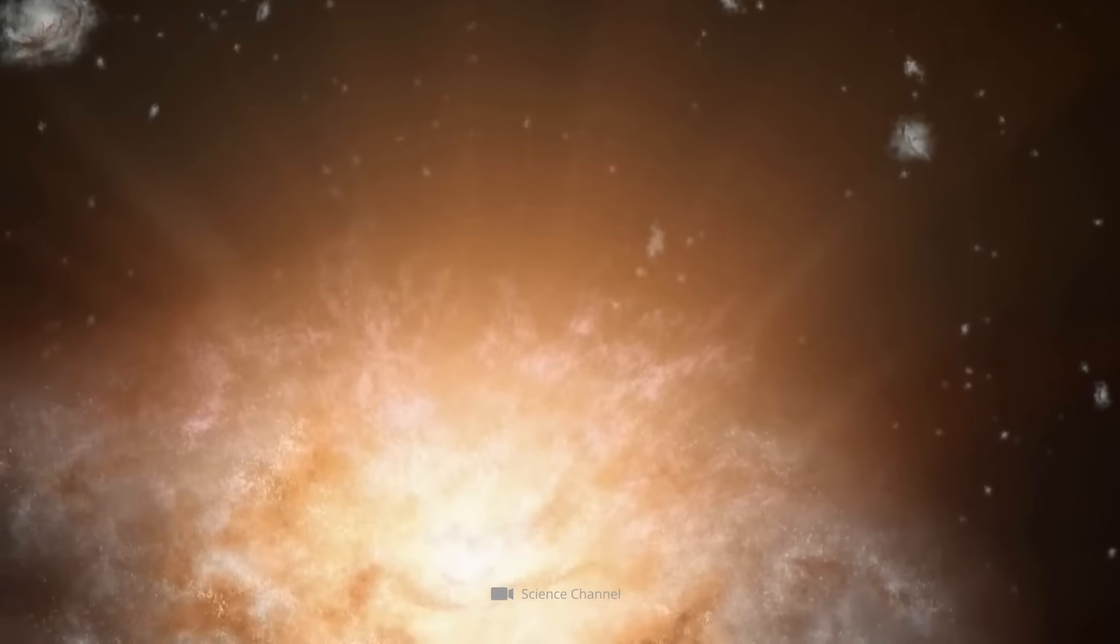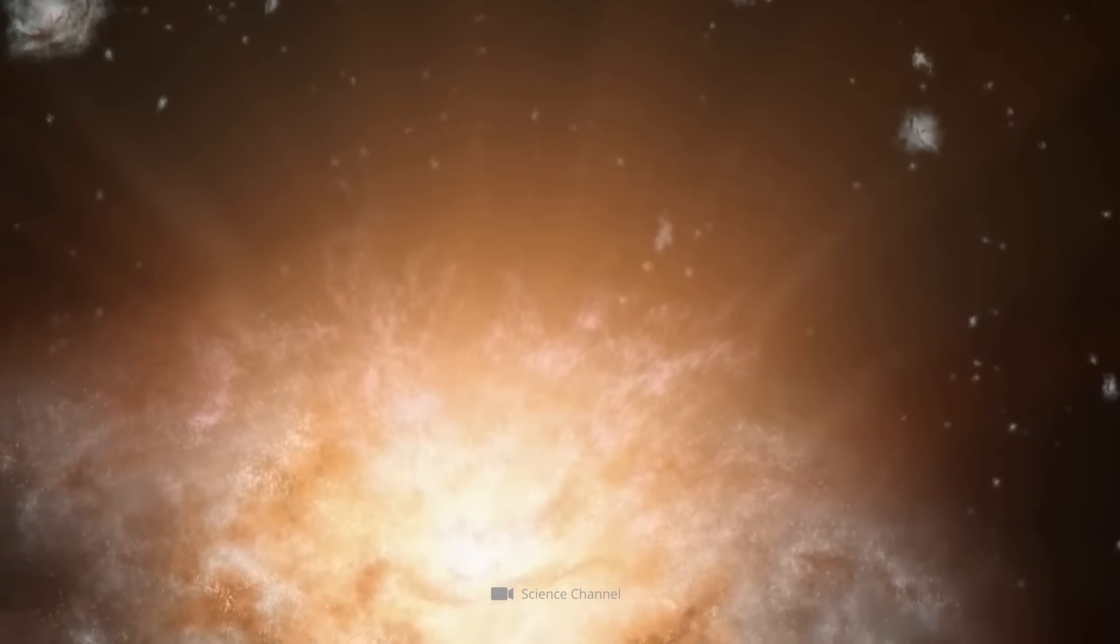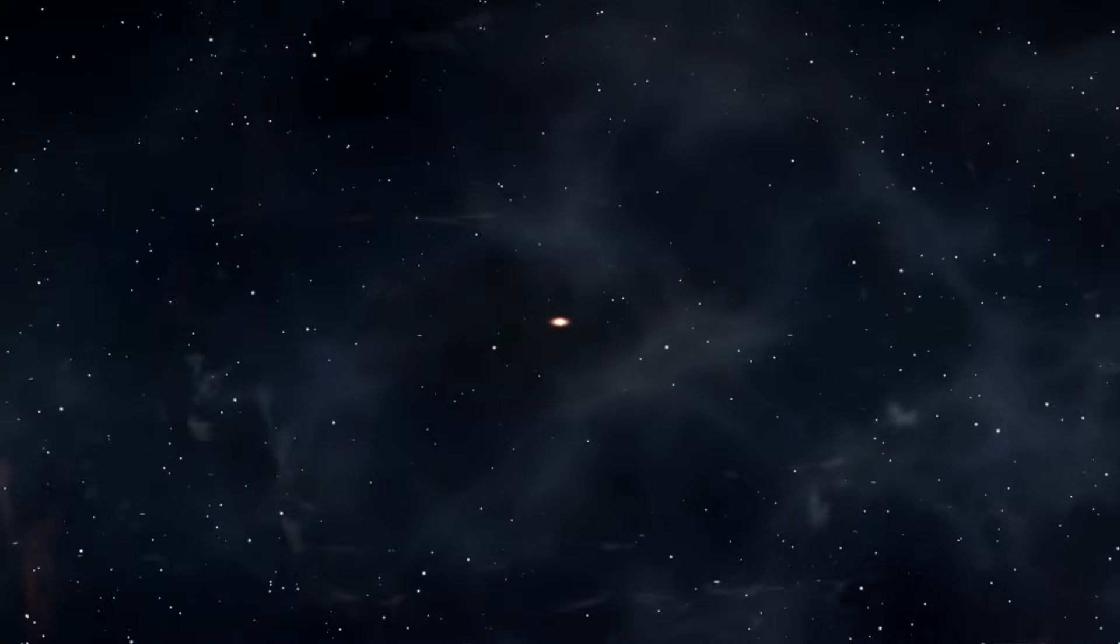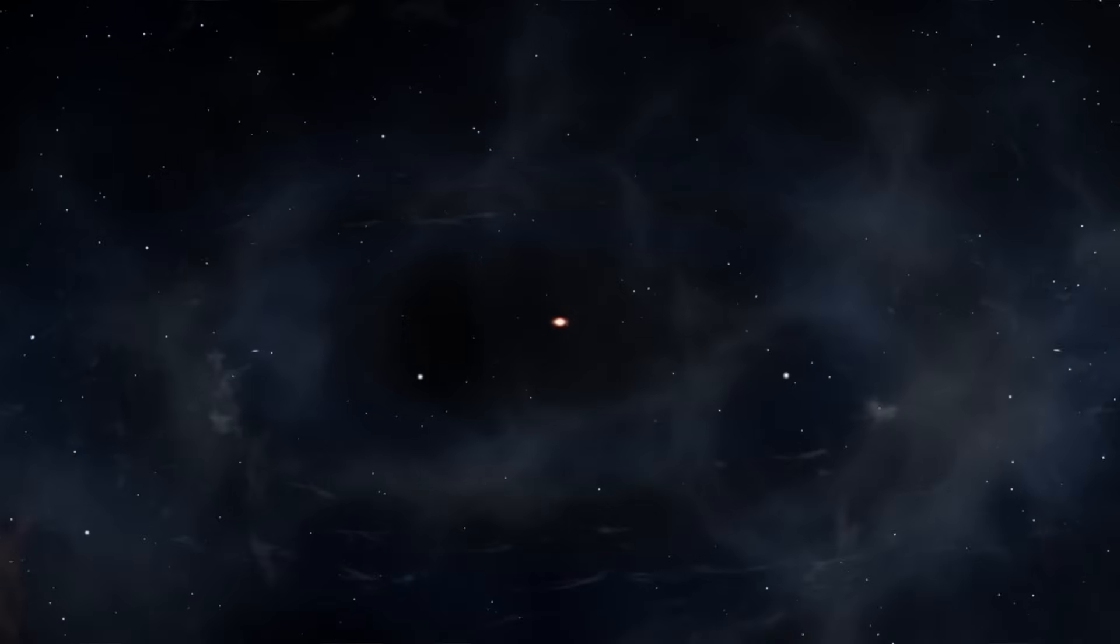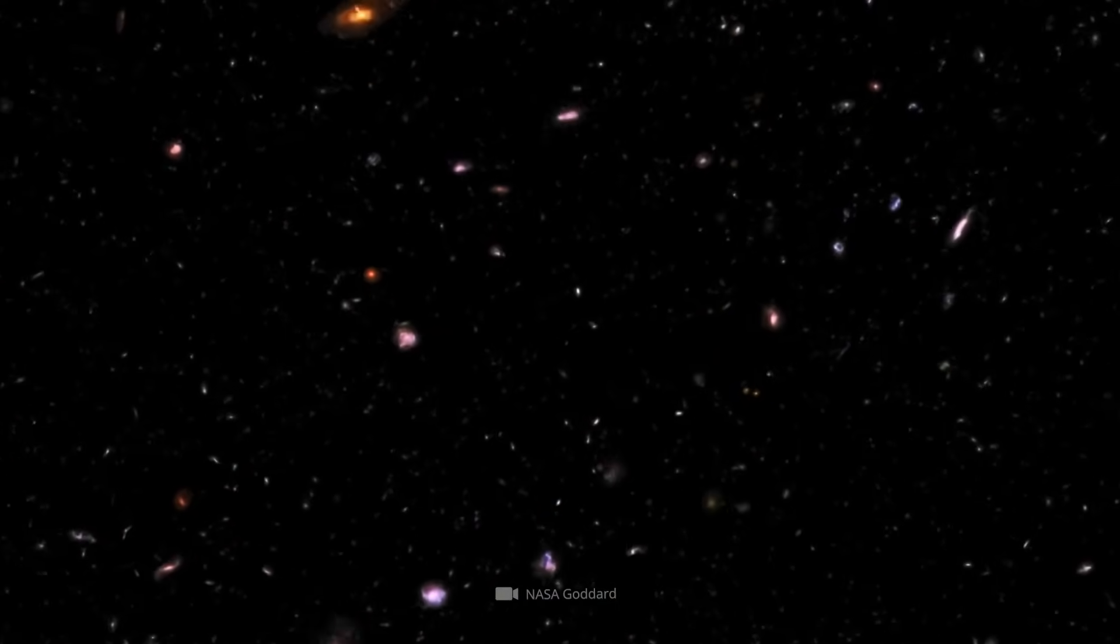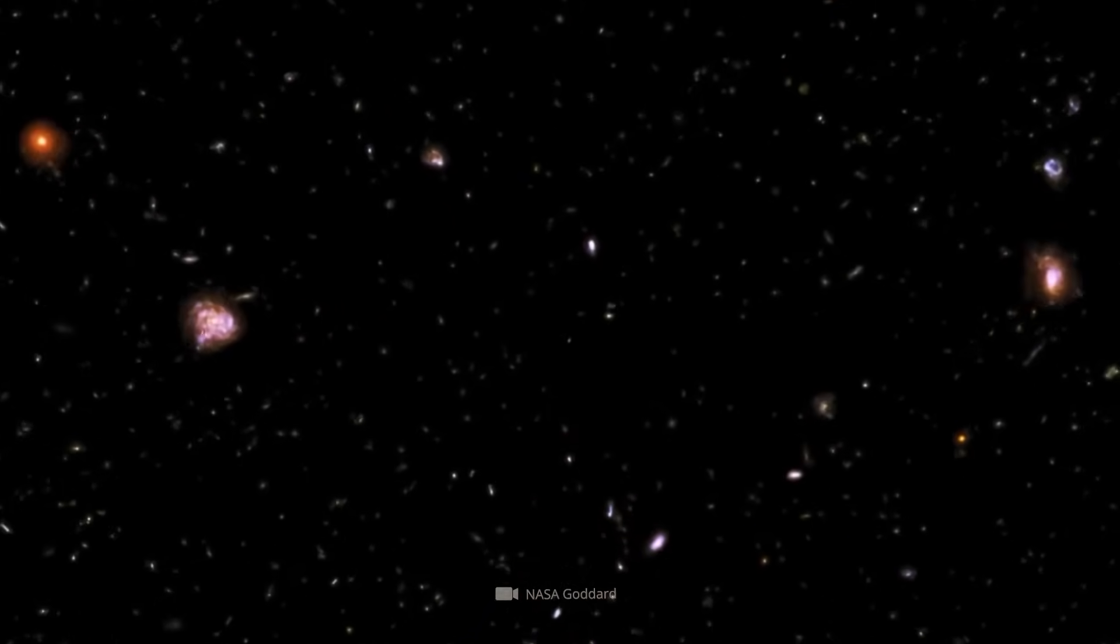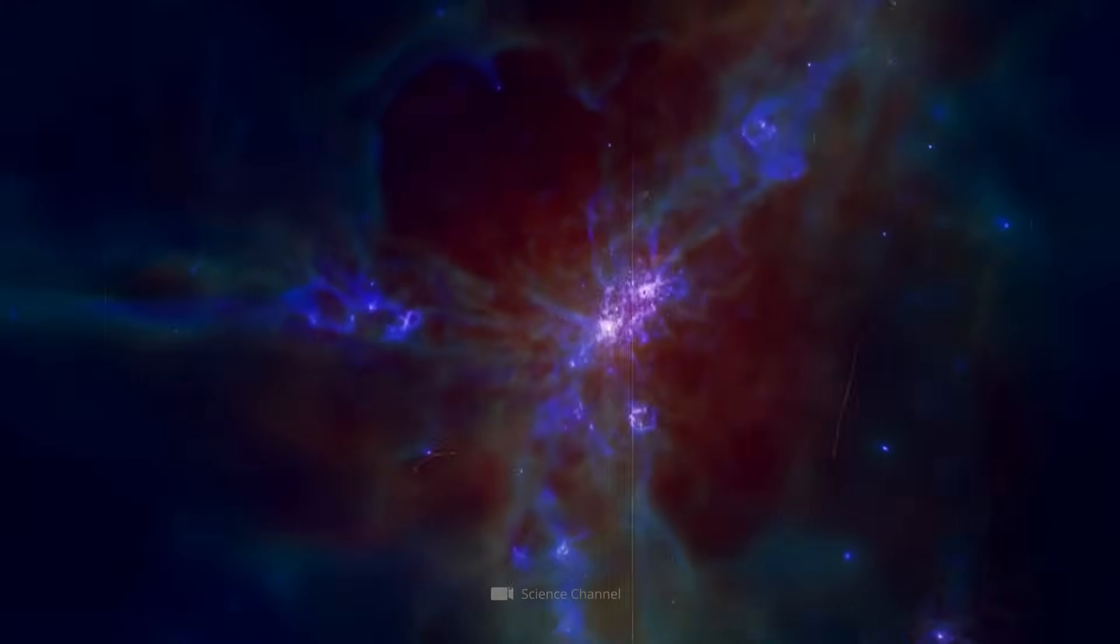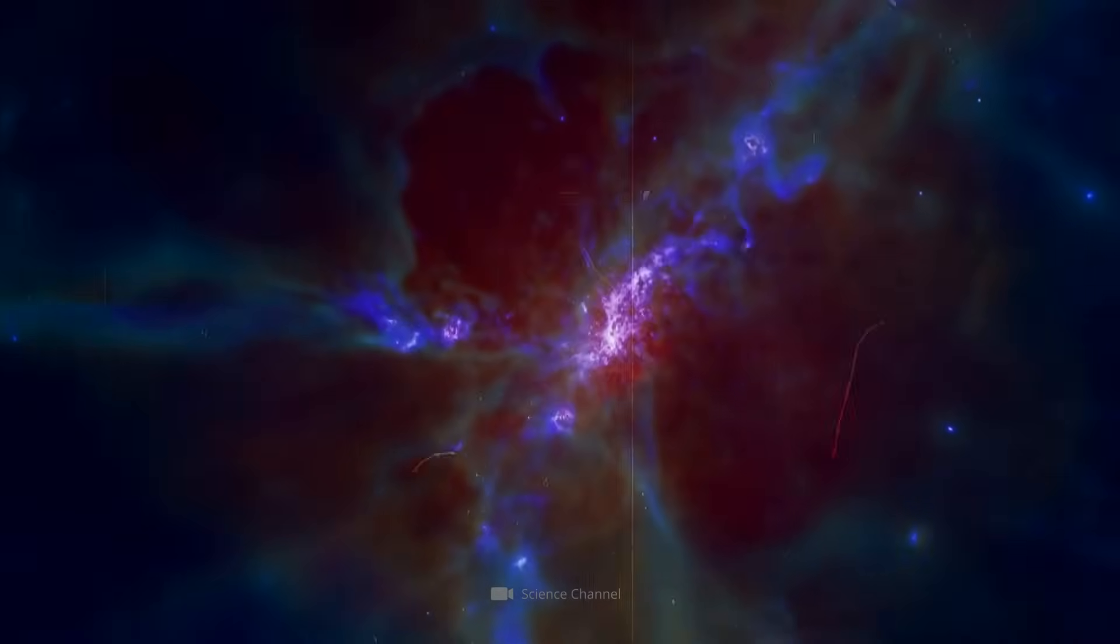The observation horizon, that is, the proverbial line of sight, limits that part of the cosmos from which information may have reached us since the Big Bang. Taking into account the expansion of the universe, which has retrospectively extended distances that have already been covered, the distance to the observation horizon is a whopping 46.3 billion light years.